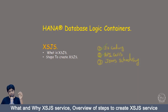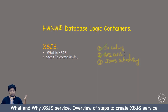The second advantage you get by using XS JS service is that you can call weather APIs and get all the information related to the current weather conditions in particular areas like London, UK, or Bangalore. That kind of flexibility the XS JS service gives.